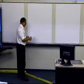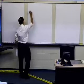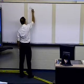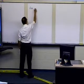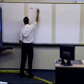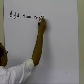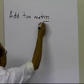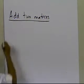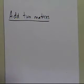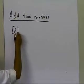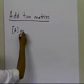In this segment, we will talk about how to add two matrices. Now, you can add two matrices, but they have to be of the same order. So let's go and see what we mean by that. So A and B can be added...